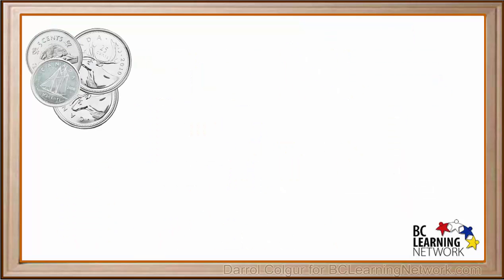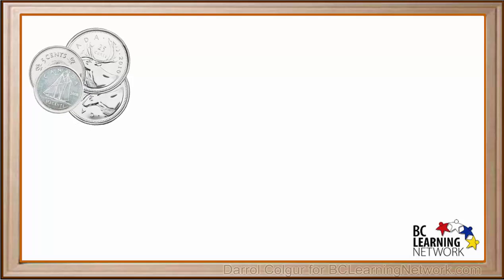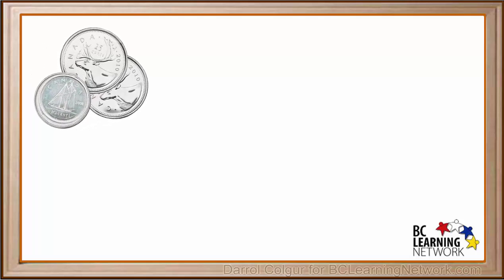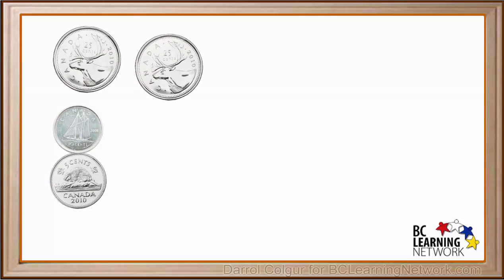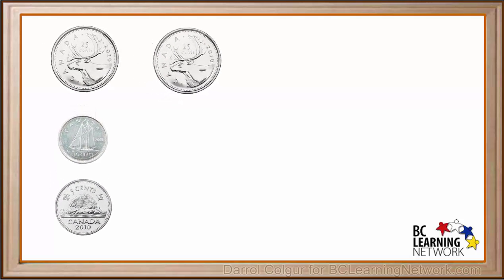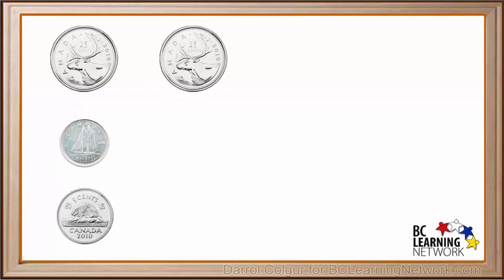Here we have a collection of some coins and we want to find their total value. The first thing we do is sort them into groups of each type of coin. We put the coins of highest value on top and the ones of lowest value on the bottom.